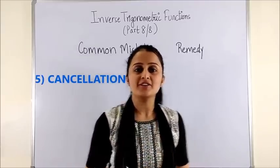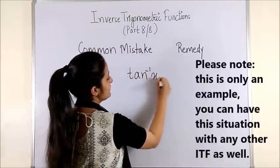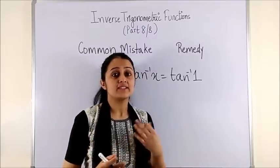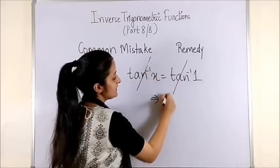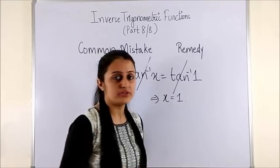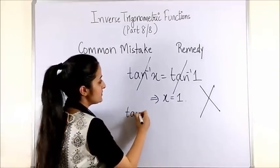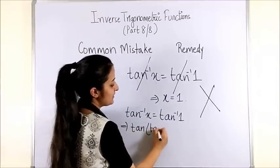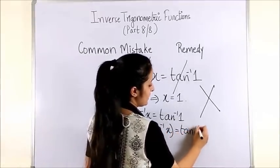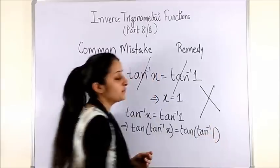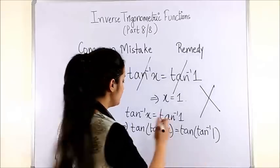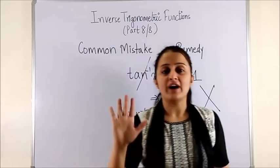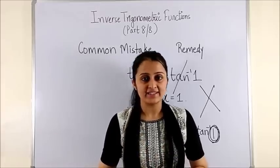Number 5: cancellation. When you come across tan inverse x equals tan inverse 1, a very common error is cancelling out the tan inverse and writing x equals 1. Always use your properties instead — take tan on both sides. This implies tan of tan inverse x equals tan of tan inverse 1. Referring to video 2, this is property 2, which gives you x equals 1 properly. These were the 5 most common mistakes in the chapter.